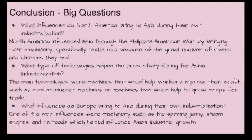Now we have the conclusions to our big questions. First: What influences did North America bring to Asia during their own industrialization? North America influenced Asia through the Philippine-American War by bringing over machinery, specifically textiles, because of the great number of rivers and streams they had. Second: What type of technologies helped productivity during the Asian industrialization? The main techniques were machines that helped workers improve their crafts, such as coal production machines or machines that helped grow crops for trade. Third: What influences did Europe bring to Asia? One of the main influences was machinery such as the spinning jenny, steam engines, and railroads, which helped influence Asia's industrial growth.